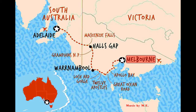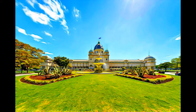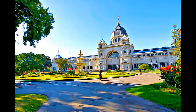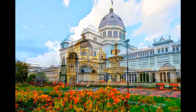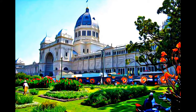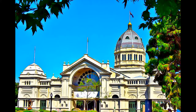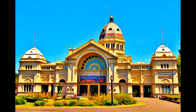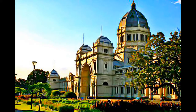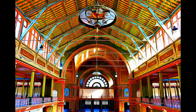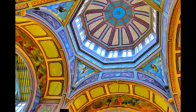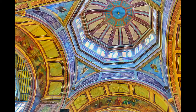The Royal Exhibition Building and its surrounding Carlton Gardens were designed for the Great International Exhibitions of 1880 and 1888 in Melbourne. The building and grounds were designed by Joseph Reed. The building is constructed of brick and timber, steel, and slate. It combines elements from the Byzantine, Romanesque, Lombardic, and Italian Renaissance styles.